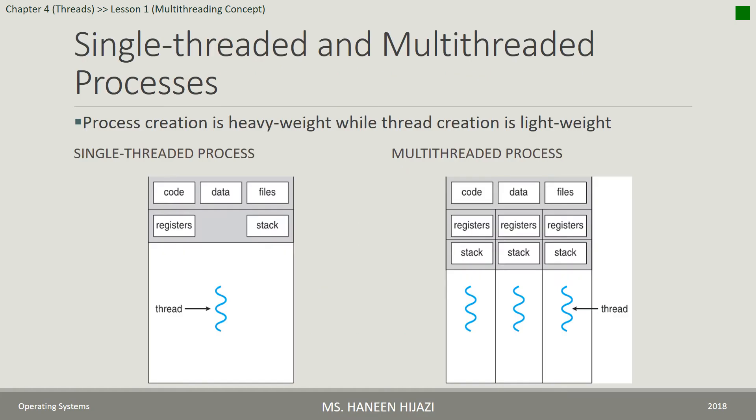Single-threaded and multi-threaded processes: thread creation is much lighter on the system than process creation, because every time you create a process you need to allocate new space for the data section, code section, files, registers, and stacks — even for the same application. If you run it twice, you actually have two processes with the code section duplicated in different address spaces. In a multi-threaded process, all threads from the same process share the same address space, code section, and data section. Each thread has its own registers and stack — specifically, each thread comprises a thread ID, program counter, register set, and stack — and each thread shares with other threads the code section, data section, open files, and signals.